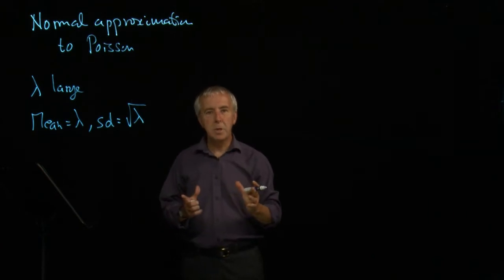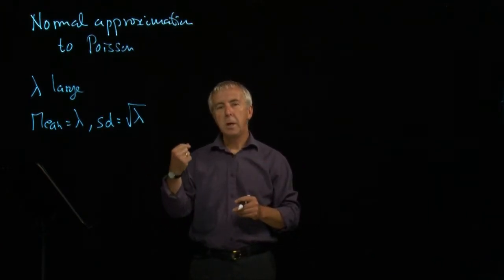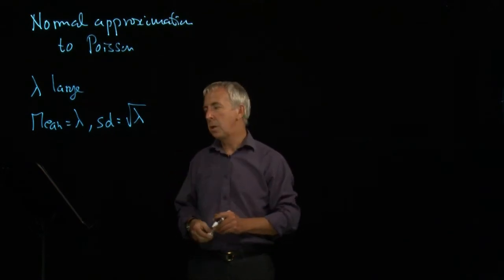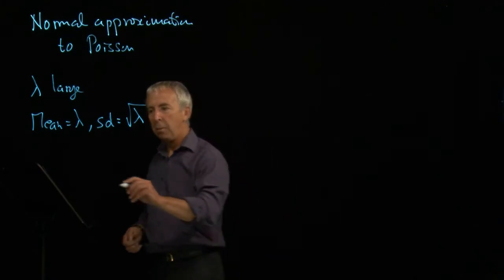So given that parameter for the Poisson, the mean, we can find the mean and the standard deviation of the replacement normal distribution. So let's have an example of that.